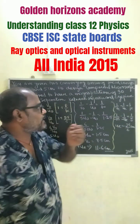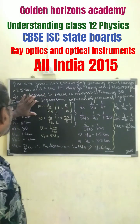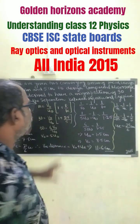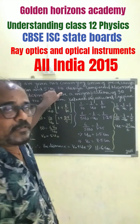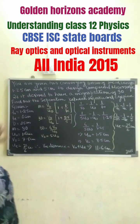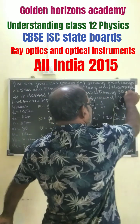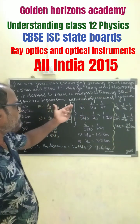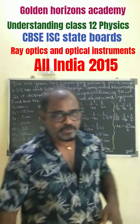For compound microscope design, we have two lenses of focal length. Naturally, the smaller focal length is the objective lens and the larger is the eyepiece. Now, if it is decided to have a magnification of 30, then we must find out the separation between the object and the eyepiece.